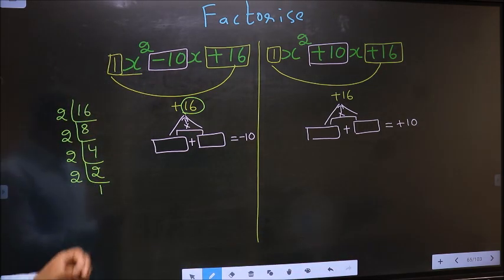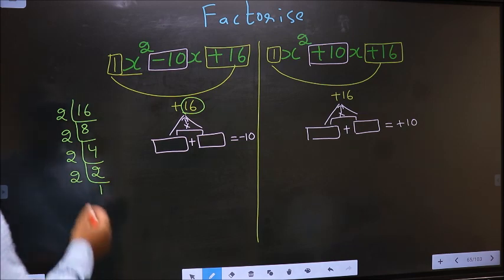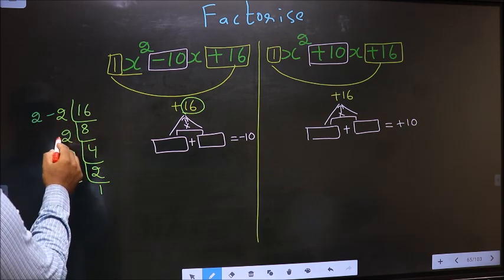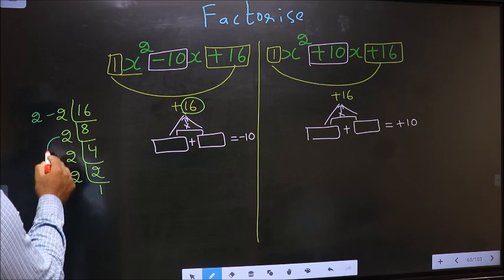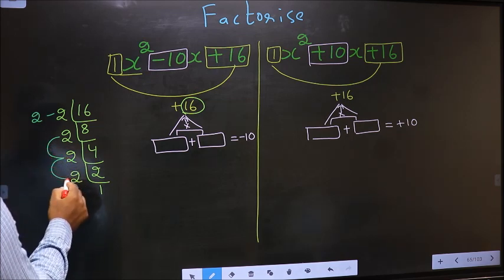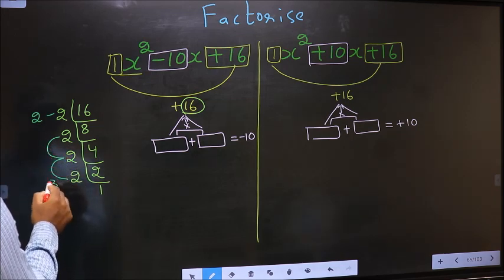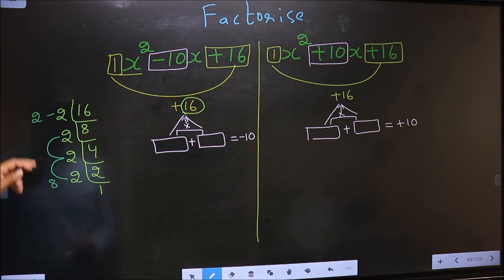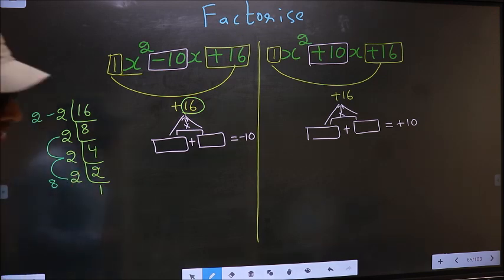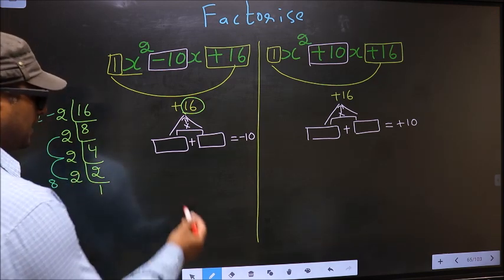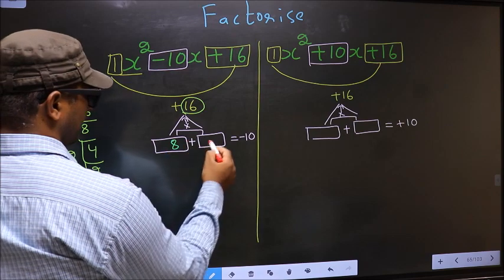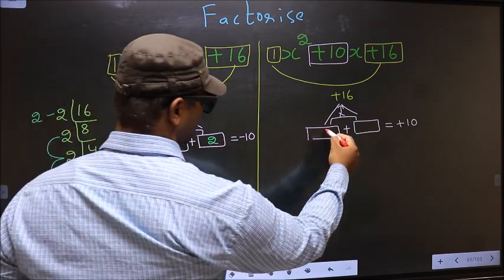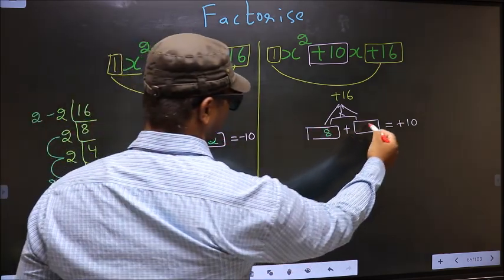The two numbers should be: the first number is 2, and the second number is 2 into 2 is 4, 4 into 2 is 8. So 2 plus 8 is 10 and 2 into 8 is 16. So here you write 8 and 2. Here also the same — 8 and 2.